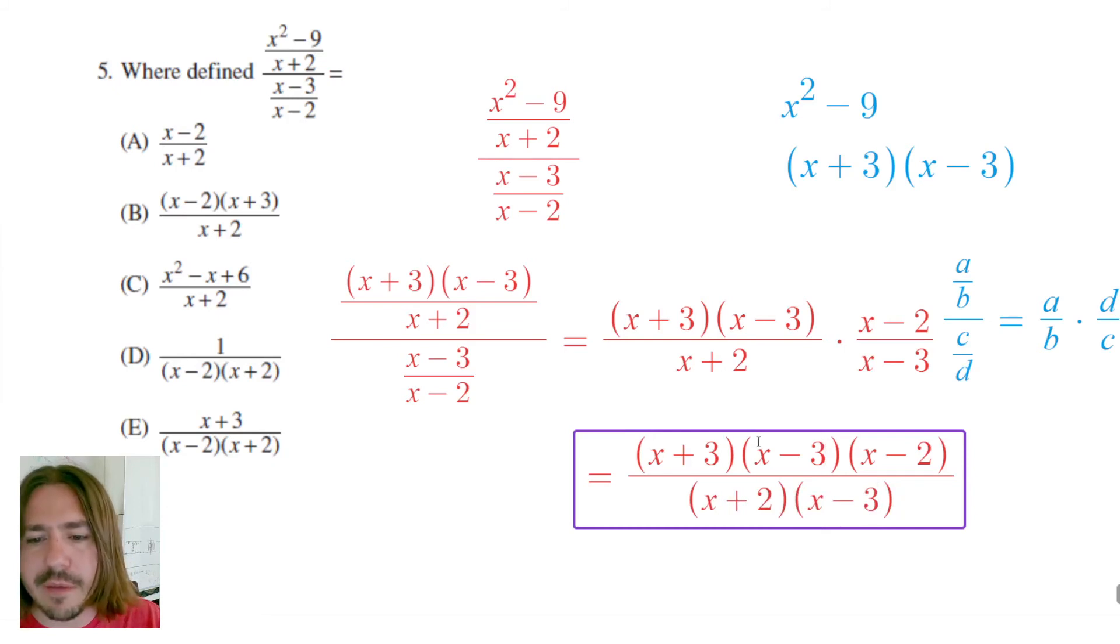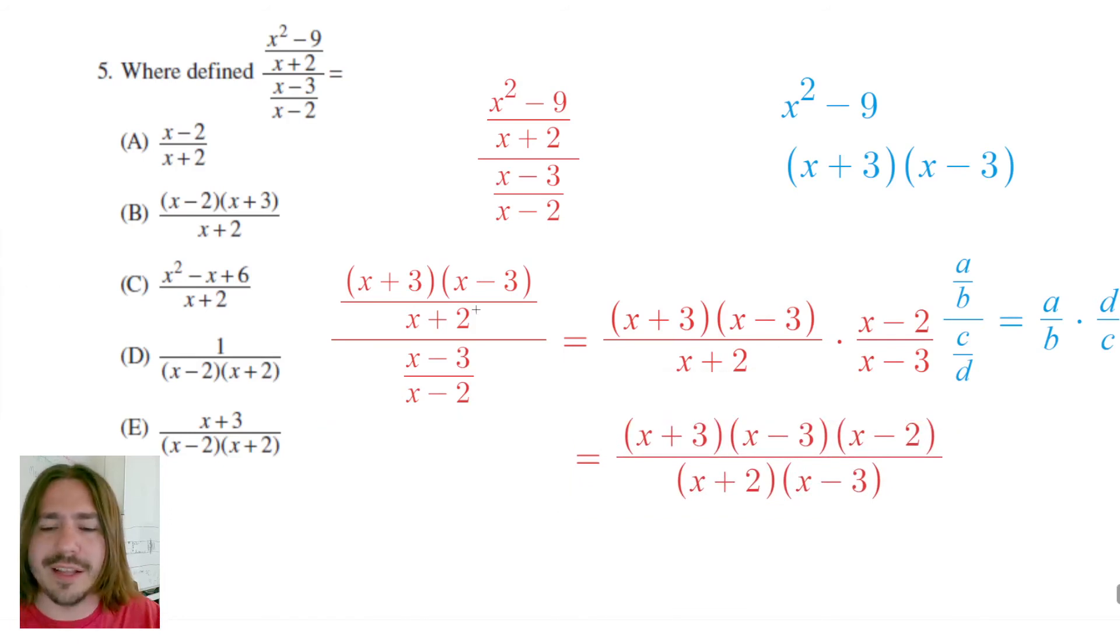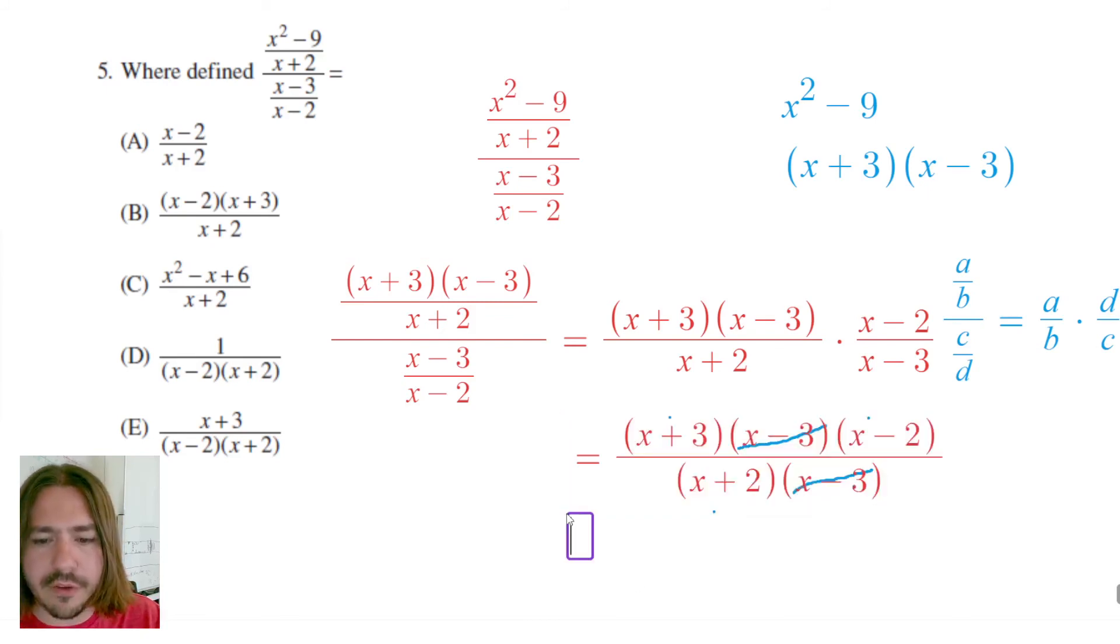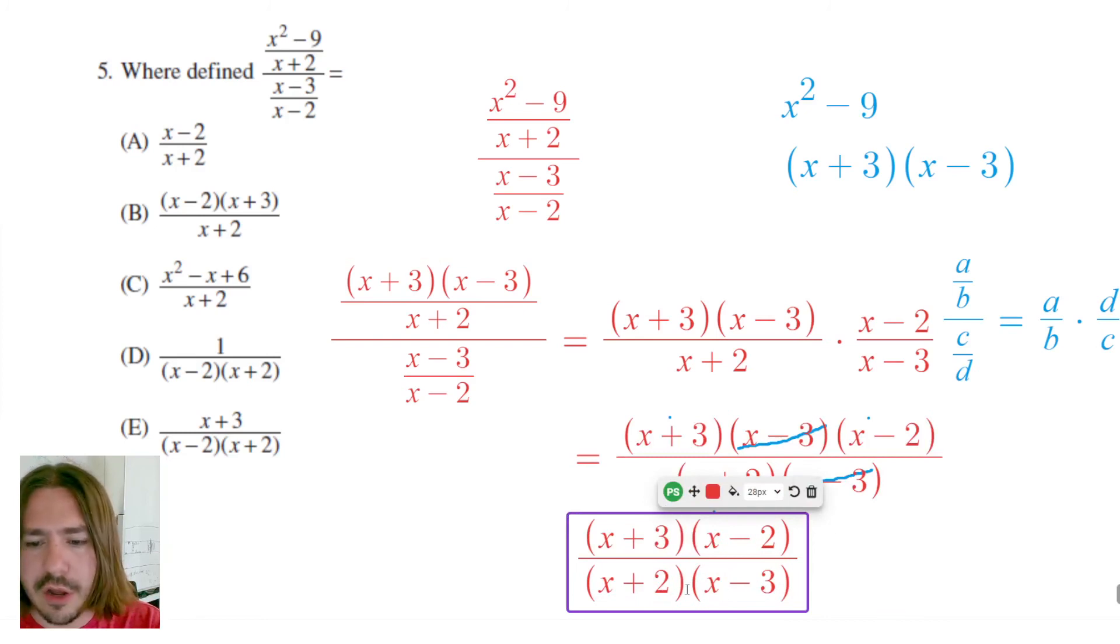Anytime you divide something by itself, as long as it's defined at that value, it will equal 1. That allows us to essentially cancel out some of these terms. Notice how I've got X minus 3 divided by X minus 3 is going to be 1 everywhere where it is defined. That only leaves us with these three binomials. My final answer here is going to be X plus 3 times X minus 2 all over X plus 2.